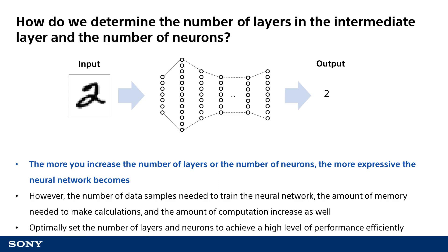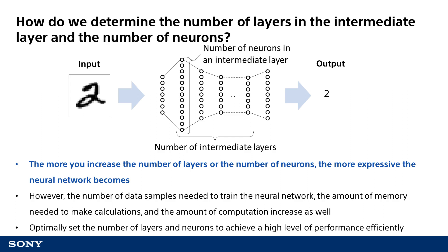In the previous video, 'Basics of Designing Neural Network,' I explained that the number of intermediate layers and the number of neurons were optimized on a case-by-case basis according to the problem to be solved. Here, the number of intermediate layers indicates the number of times that artificial neuron calculation is repeated from input to output. The number of neurons in an intermediate layer indicates the number of neurons prepared for each layer.